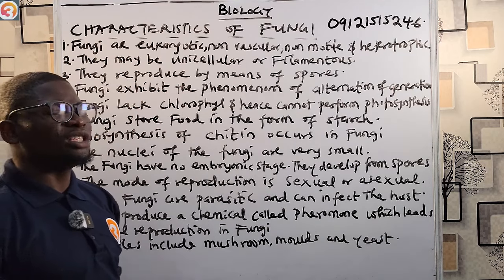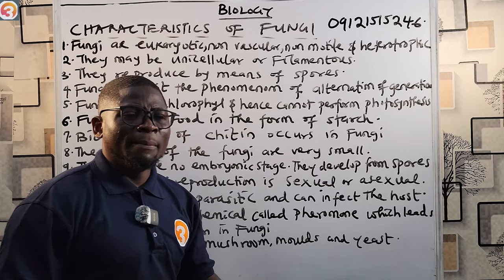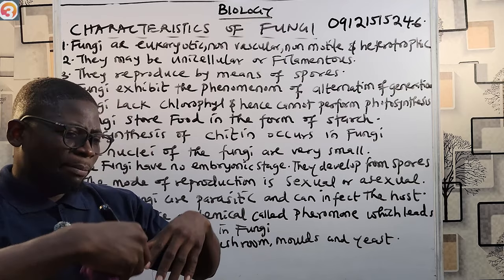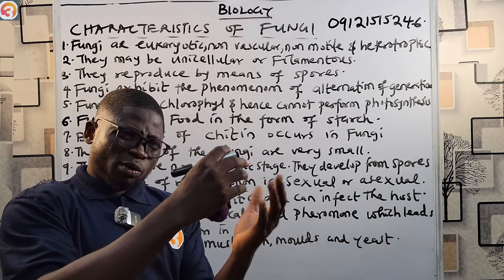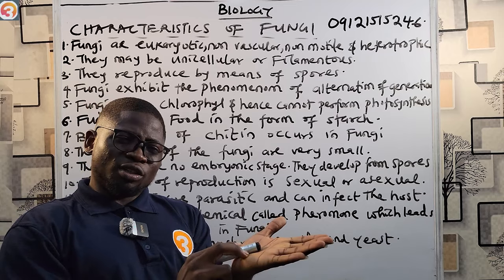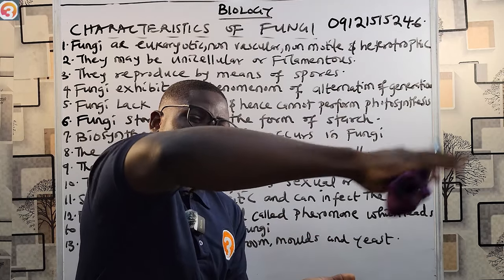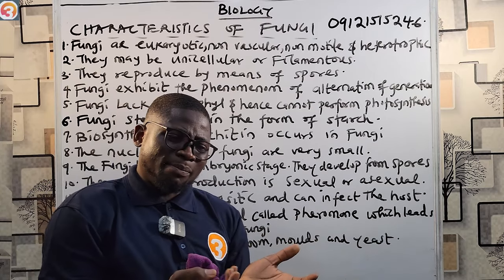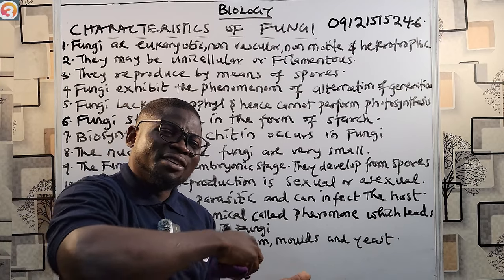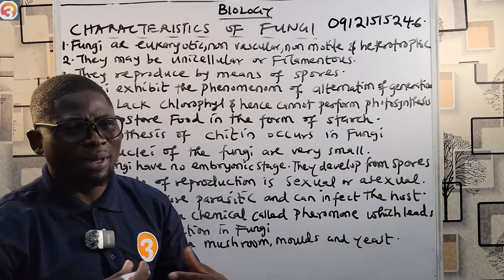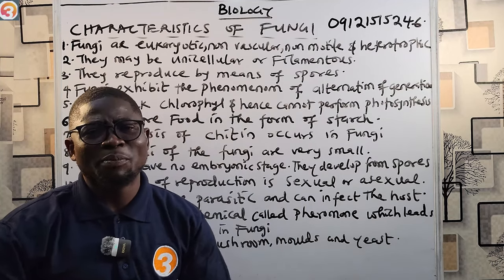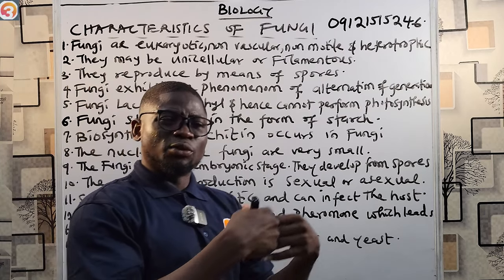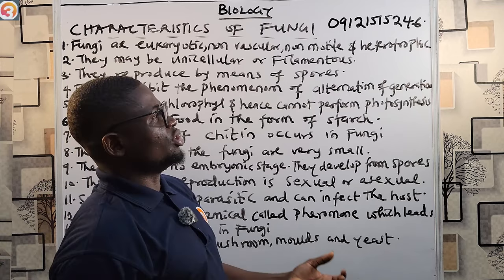Number six: they reproduce by means of spores. They release those spores, which are protected by a thick cell wall. Once they release those spores, they release them to the environment for them to go and thrive. They release those spores protected by a thick cell wall out to the environment to go and thrive.